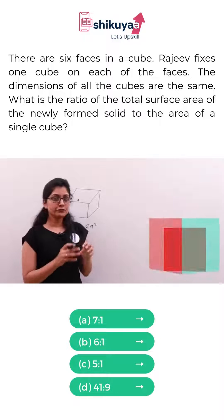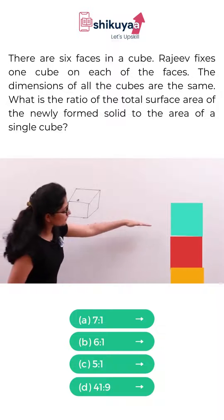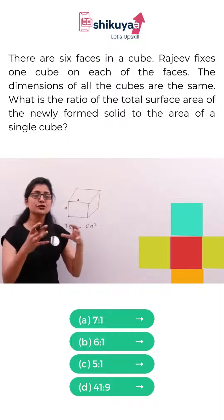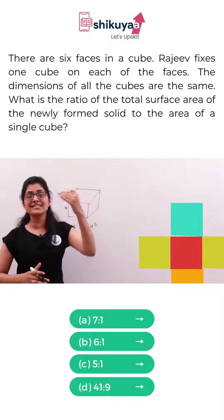What happened? Rajeev fixes an extra cube over each surface. So if this is your surface like this one, he used to fix an extra cube here. So as there are six faces, he used to fix extra six cubes.